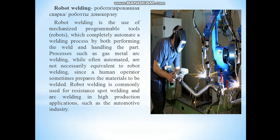Robot welding – роботизированная сварка. Robot welding is the use of mechanized programmable tools which completely automate a welding process by both performing the weld and handling the part. Processes such as gas metal arc welding, while often automated, are not necessarily equivalent to robot welding. Robot welding is commonly used for resistance spot welding and arc welding.